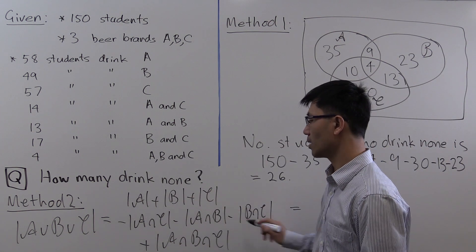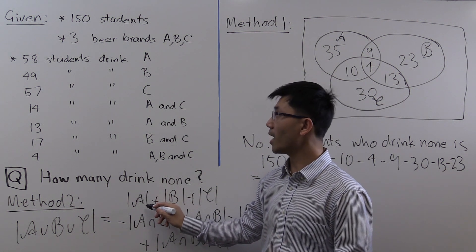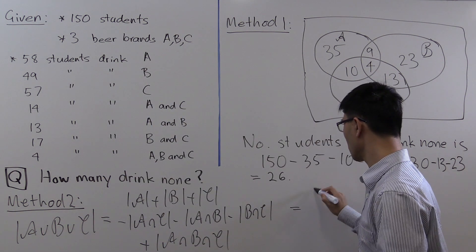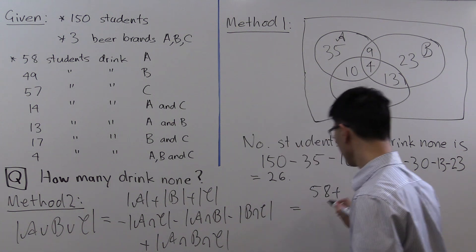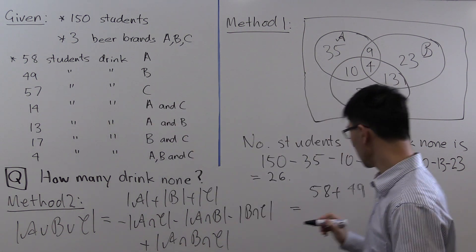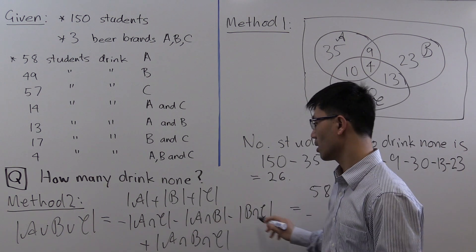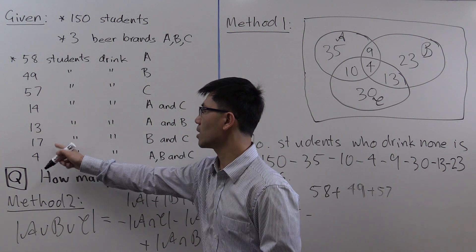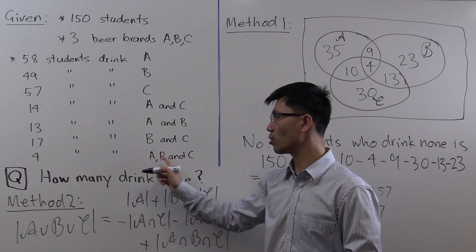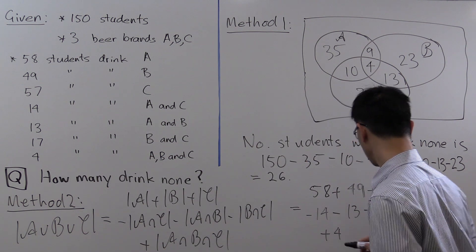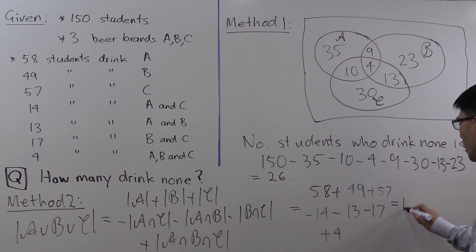Now we plug in the numbers. The values are given directly: |A| = 58, |B| = 49, |C| = 57, and we subtract the double intersections 14, 13, and 17, then add the triple intersection 4. Working this out gives a result of 124.